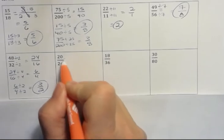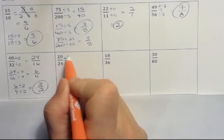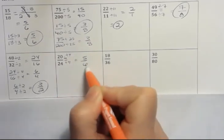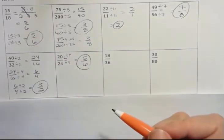What about this one? Well, I can divide both the top and the bottom by 4, and that gives me 5 sixths. And that is in lowest terms, nothing else in common.